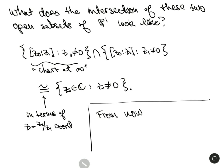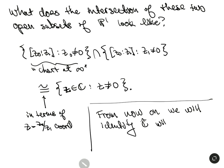From now on, we will identify ℂ-hat with P¹, and use this identification of [1 : 0] with infinity.